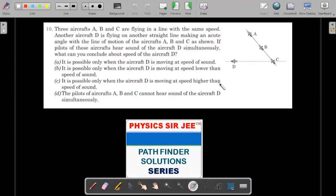This is the next one wherein you have three aircrafts A, B, C are flying in line with the same speed. Another aircraft D is flying along another straight line making an acute angle as shown. If the pilots of these aircrafts hear the sound of D simultaneously, what can you conclude about the speed of the aircraft D? Four options are mentioned and you're supposed to choose the best possible answer.